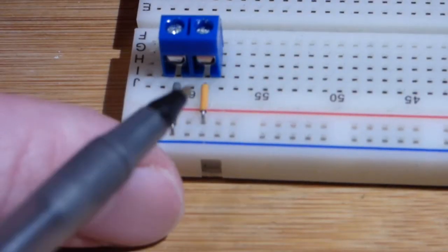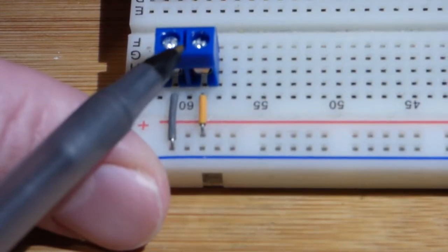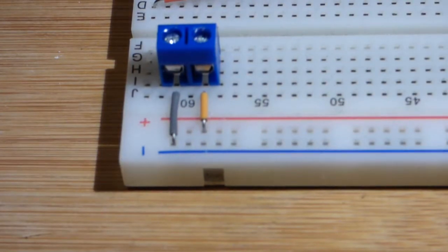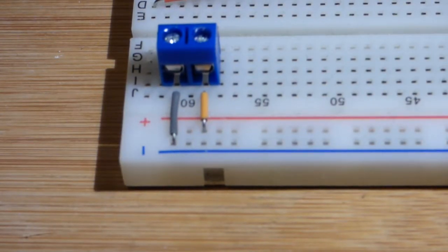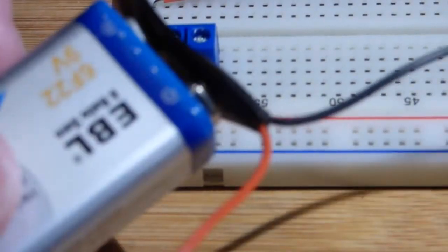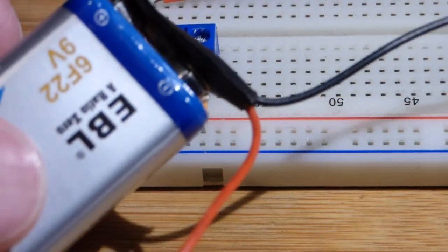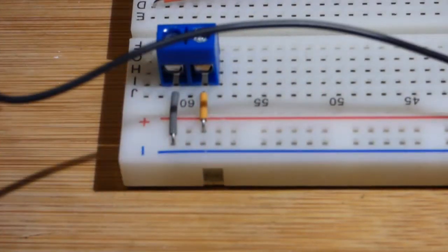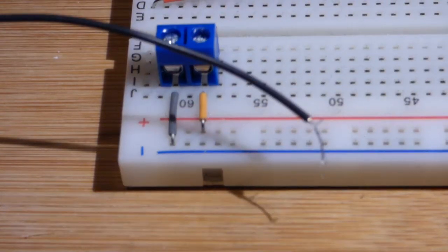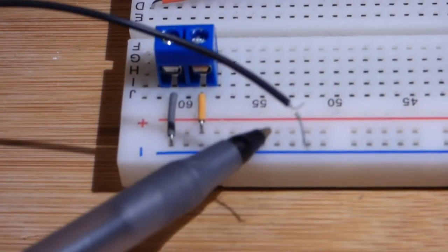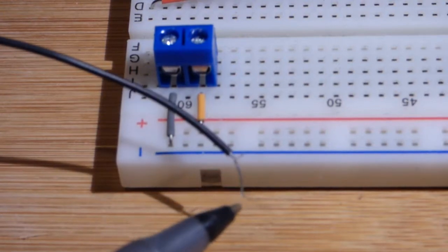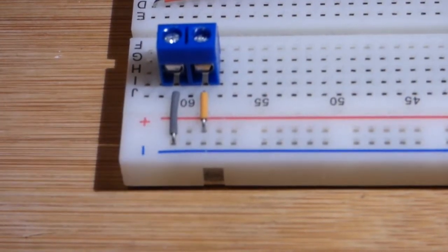Alright, so now in this video we're going to take a look at this screw terminal block here. A lot of electronics books say that you can't plug the 9 volt battery or the battery packs where you got batteries in series, 1.5 volt batteries, into the breadboard because this is stranded wires. This is a bunch of individual wires.